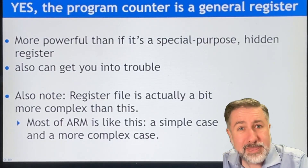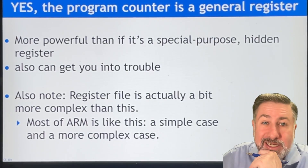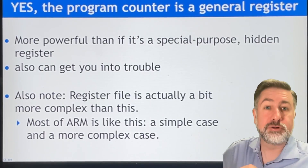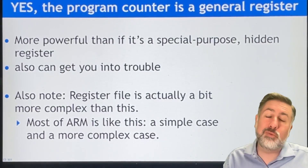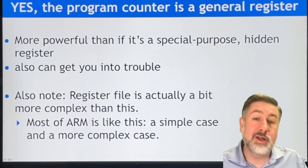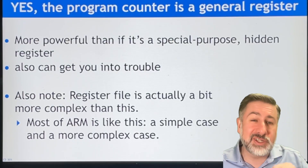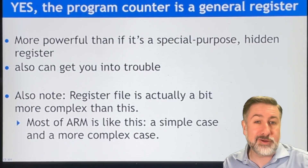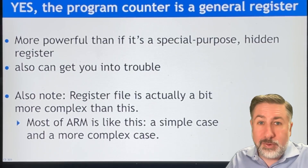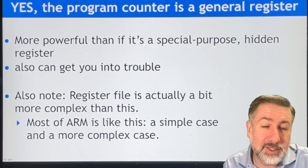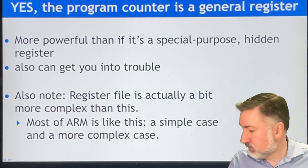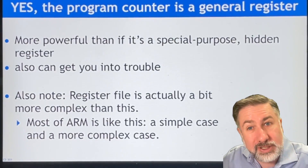It's really important to recognize — and to be a little scared of — that the program counter is a general purpose register that you as a programmer have access to. In real-world scenarios, any program trying to access the program counter will have the operating system intervene. But theoretically the program counter is a general purpose register, which is very powerful but can get you into a lot of trouble. The register file is actually significantly more complicated than this, but for a single program running in a single context, that's what it looks like. There are several copies of the register file for different contexts, which we'll get to later.